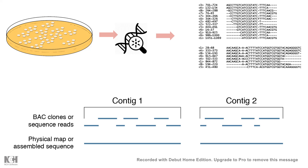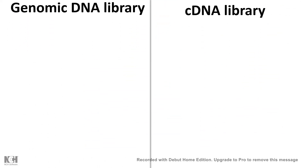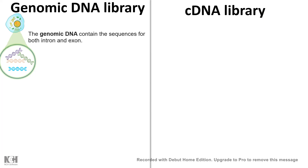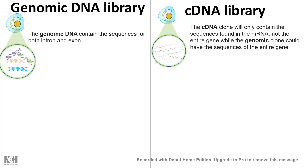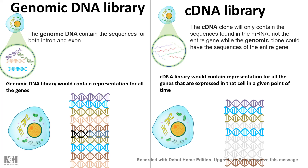There are other types of libraries, like cDNA libraries, which differ from genomic DNA libraries. A genomic DNA library contains all sequences including introns, exons, non-coding, and repetitive sequences — everything. A cDNA library, however, only contains the sequences of exons that are expressed, and only those genes expressed at that particular point in time. Genomic DNA libraries give a more complete picture of sequence information, while cDNA libraries are useful in their own way.